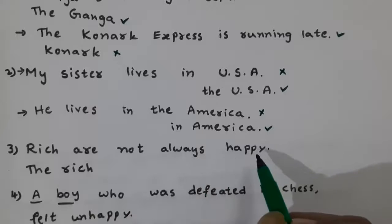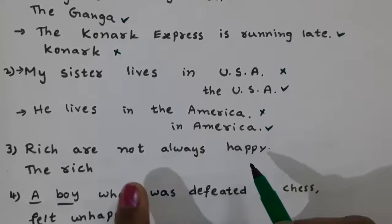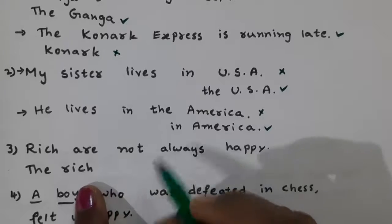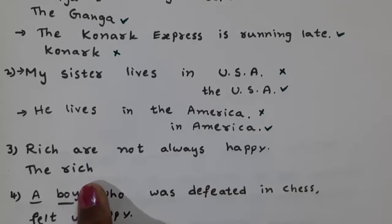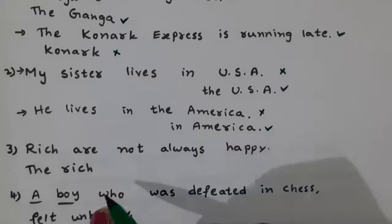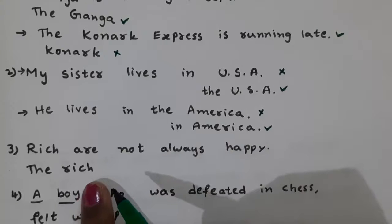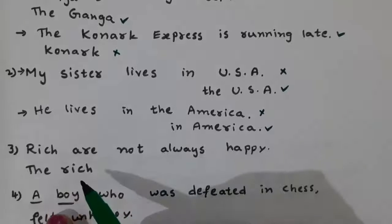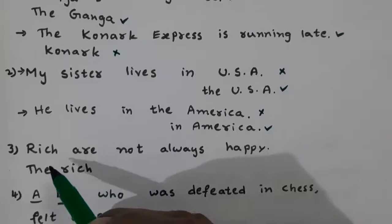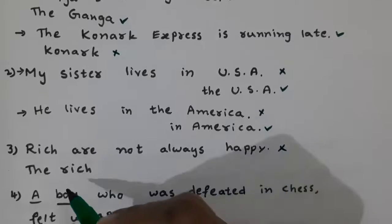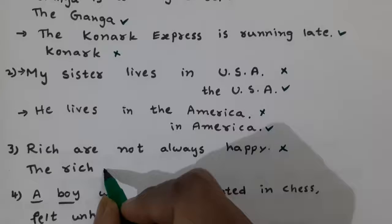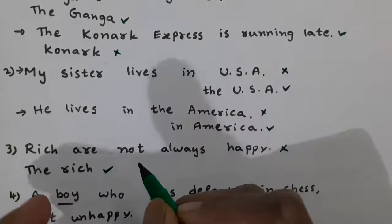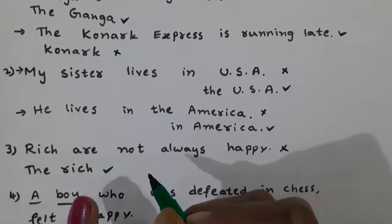Next: 'Rich are not always happy' versus 'The rich are not always happy.' When an adjective represents a whole group of particular persons, we use 'the' before that adjective. We can say 'He is a rich man' or 'He is a poor man', but when it indicates a larger group, we use the definite article 'the'. So 'The rich are not always happy' is correct — 'the rich' here indicates all rich people.